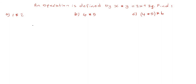We are asked to find the value of part A, which is 1 asterisk 2. Note we have two elements here: 1 and 2. So 1 is associated with the x variable and 2 is associated with the y variable. In other words, x is equal to 1 and y is equal to 2.